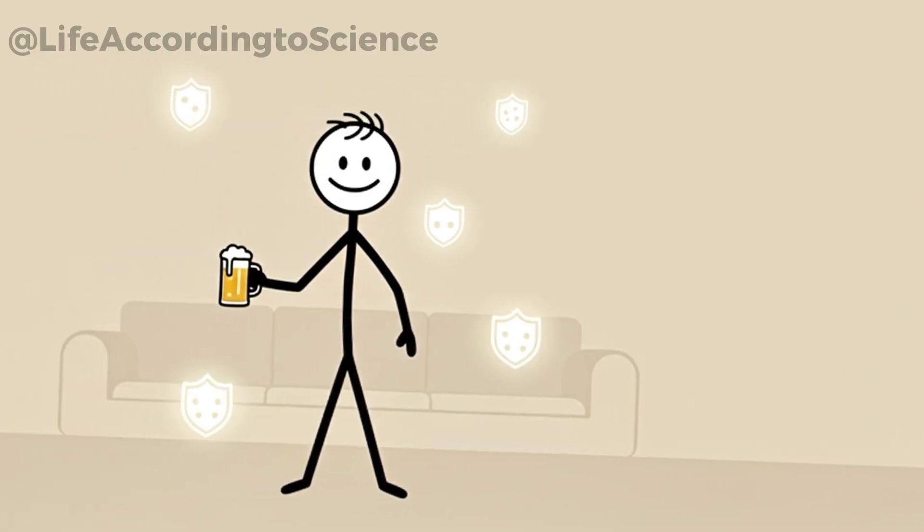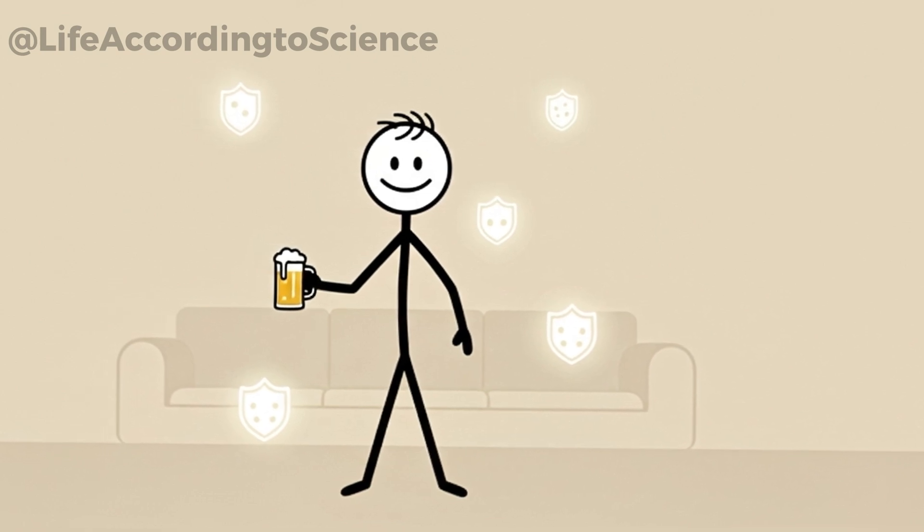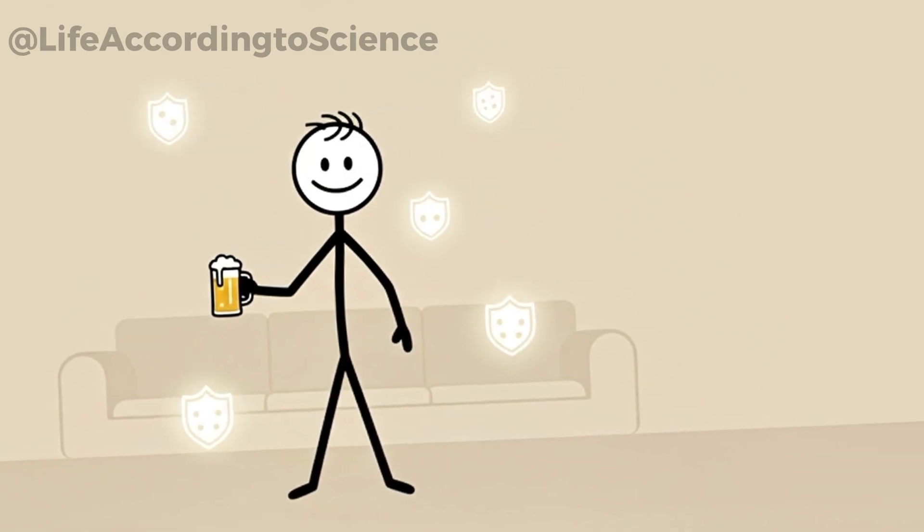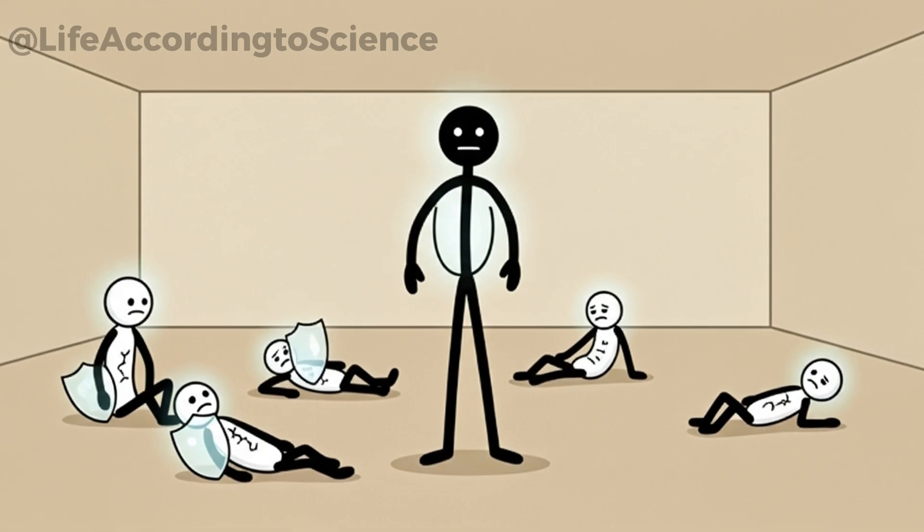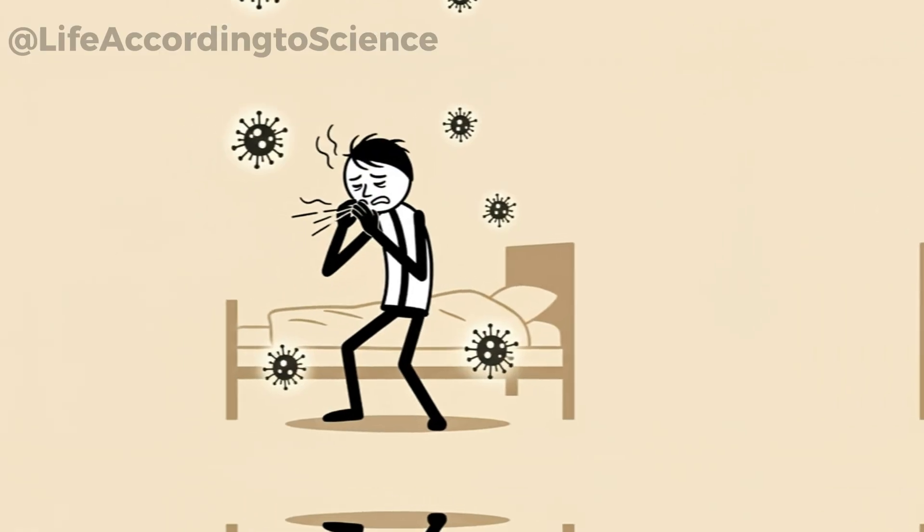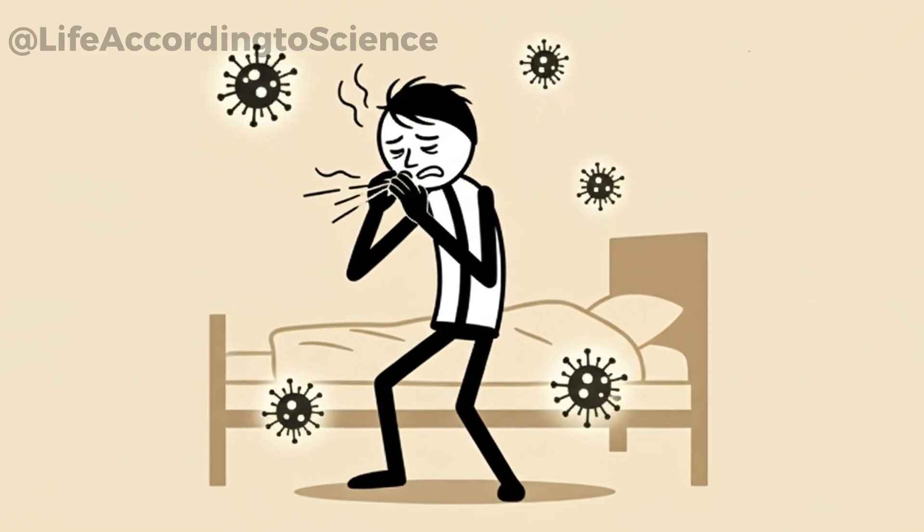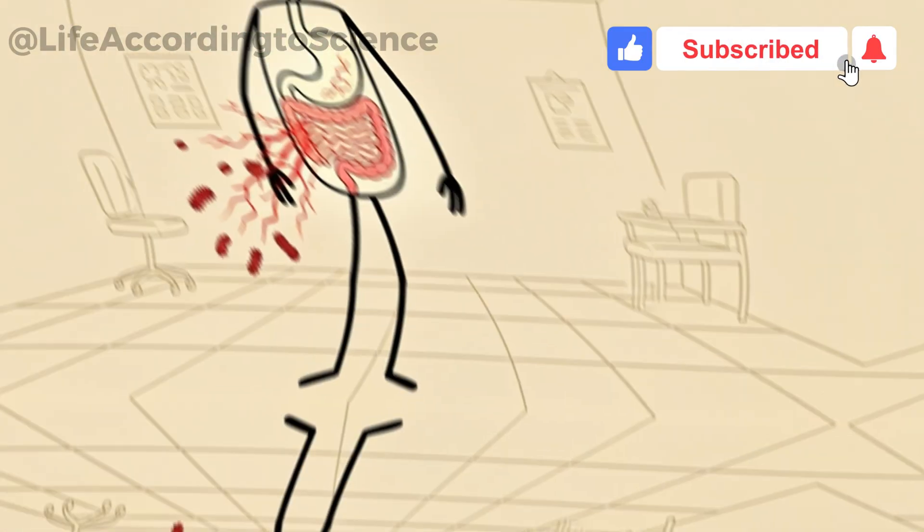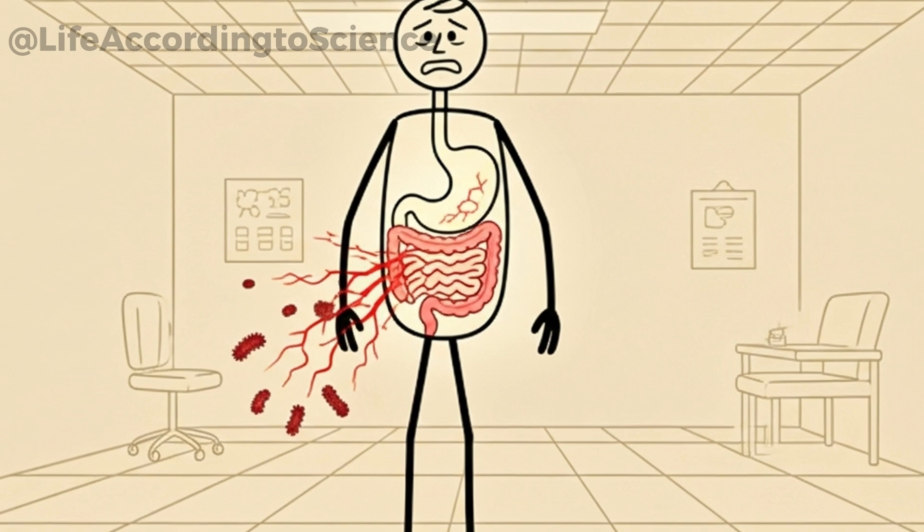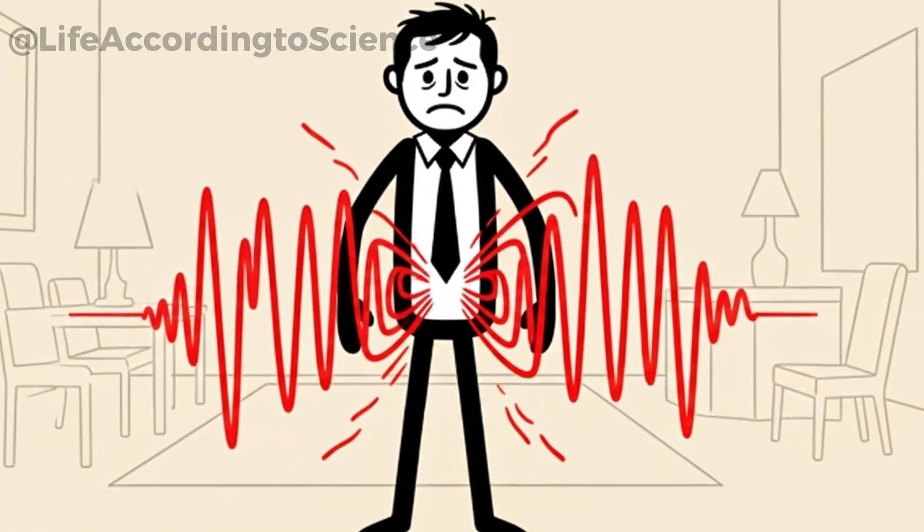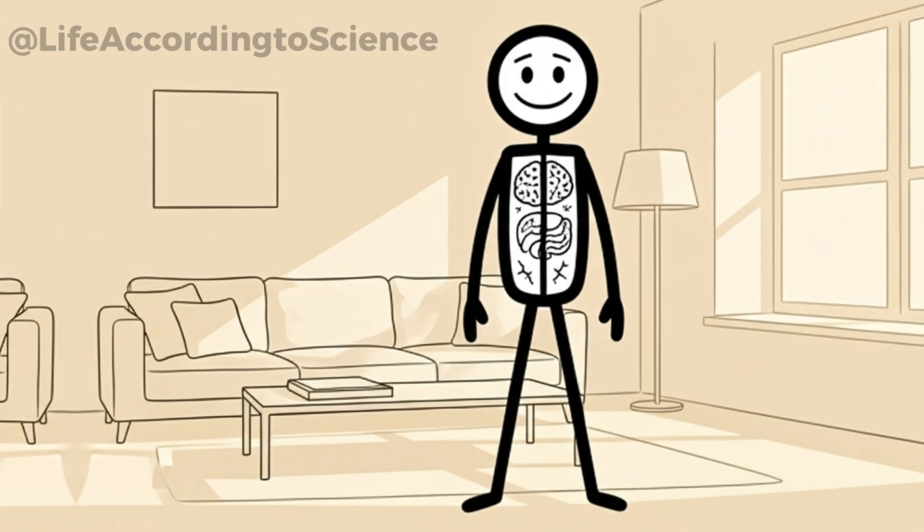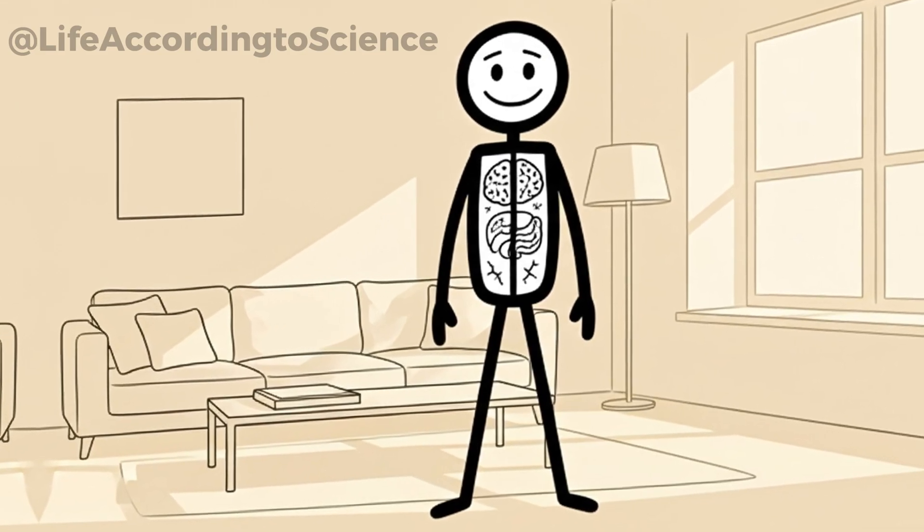One surprising consequence of daily beer consumption is its impact on immunity. At first, alcohol seems harmless, but it actually disrupts the production and activity of white blood cells, your body's defense soldiers. Science reveals that regular alcohol intake makes the immune system less efficient at fighting infections. This means you may catch colds more easily, heal slower, and feel fatigued without knowing the root cause. Alcohol also increases gut permeability, sometimes called leaky gut. Harmful bacteria and toxins can enter the bloodstream more easily, triggering chronic inflammation throughout the body. So instead of strengthening you, a daily beer quietly weakens your resilience.